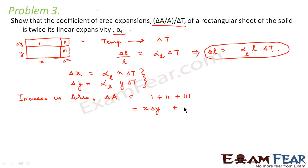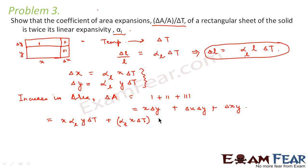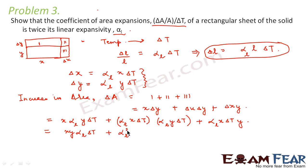For area 2, it is delta X into delta Y. For area 3, it would be delta X into Y. Now we replace the values of delta X and delta Y: X into delta Y is alpha L Y delta T, plus delta X delta Y is alpha L X delta T into alpha L Y delta T, plus delta X Y is alpha L X delta T into Y.